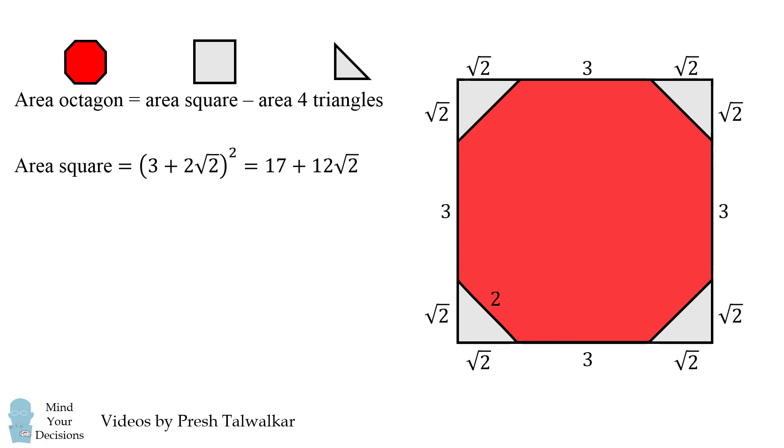The area of the square will be the area of a square with a side length of 3 plus 2 times the square root of 2. So we square the side length and we get 17 plus 12 times the square root of 2. We then calculate the area of one triangle as 1 half times the square root of 2 times the square root of 2, which equals 1.